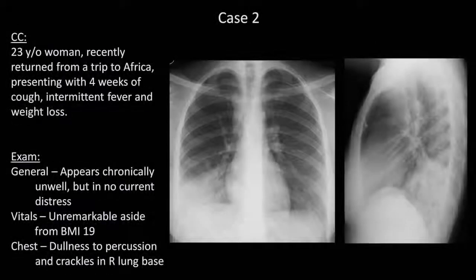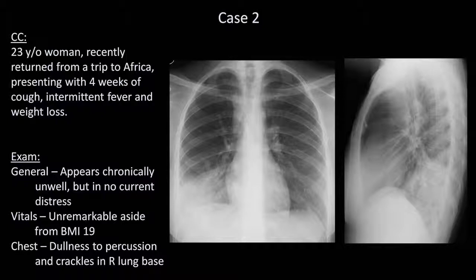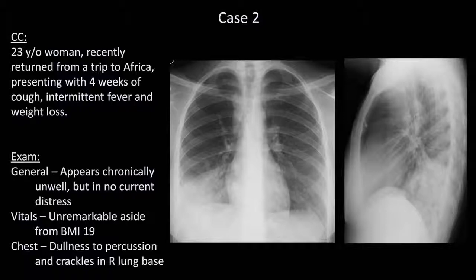Case 2. A 23-year-old woman, recently returned from a trip to Africa, presents with 4 weeks of cough, intermittent fever, and weight loss. The first thing you probably noticed was the dense opacification of the right lower lung field on the PA film. Examining the lateral film, we see that the patient has an opacity in the inferior posterior part of the lung. Thus, this opacity is in the right lower lobe.